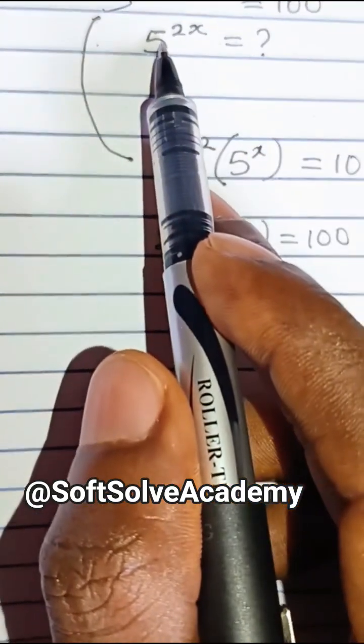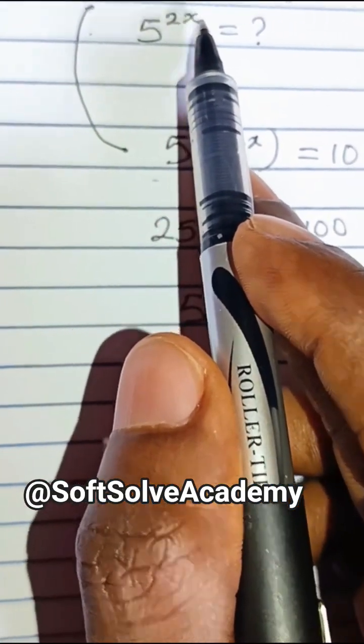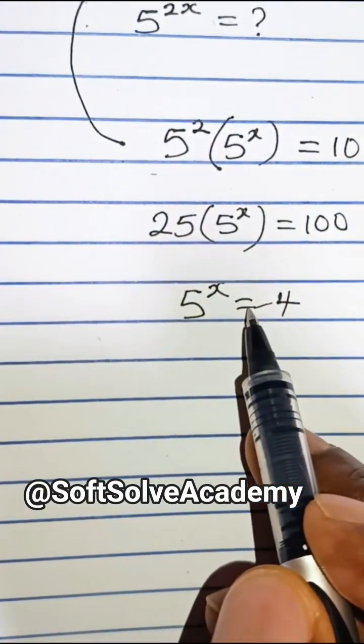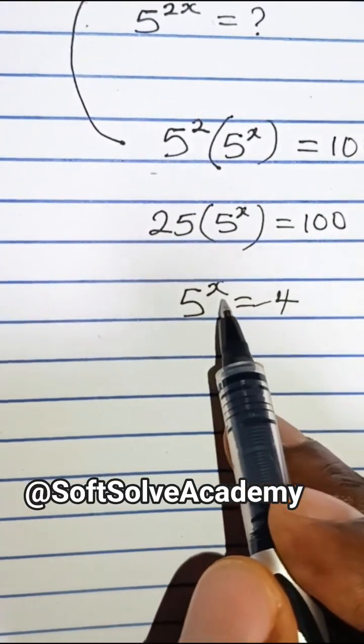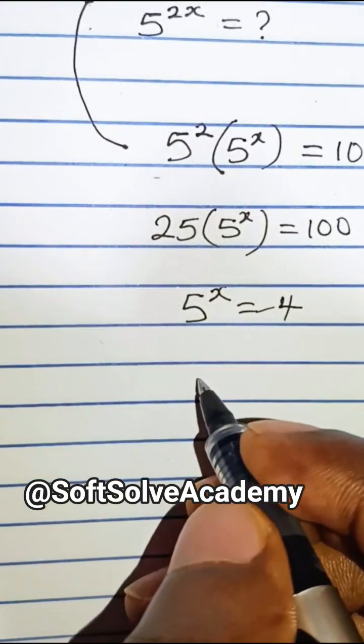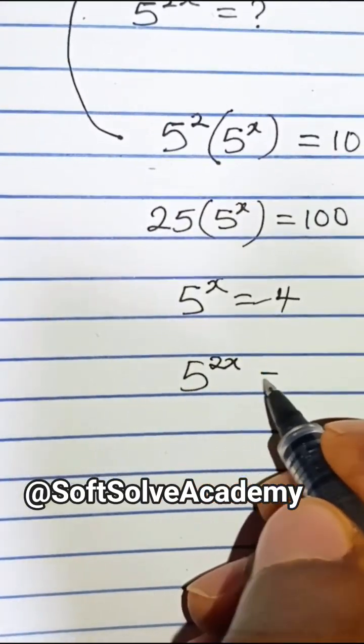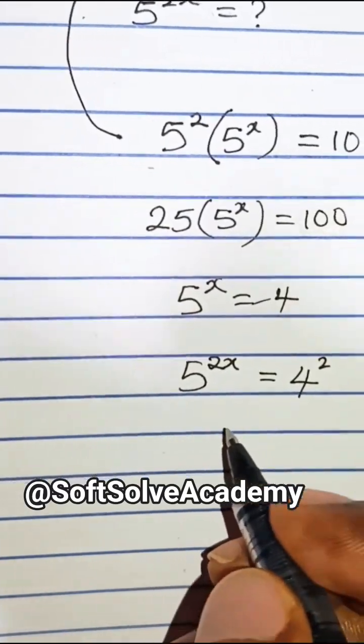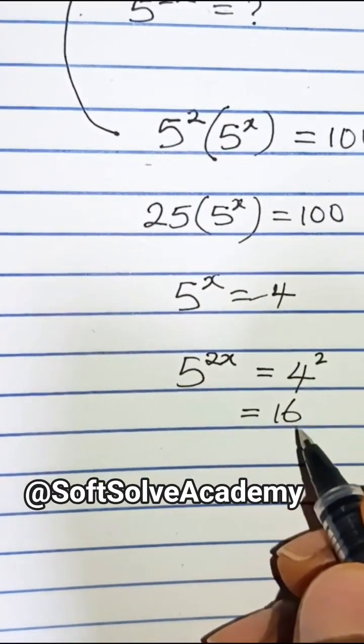As you can see, they want us to find 5 to the power of 2x. If you multiply the powers of both sides by 2, we have 5 to the power of 2x equals 4 to the power of 2, which equals 16.